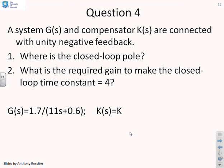Question 4. A system g of s and a compensator k of s are connected with unity negative feedback. Where's the closed loop pole? And what's the required gain to make the closed loop time constant equal to 4? And here's the system that you're given. g equals 1.7 over 11s plus 0.6 and k of s equals k. So we want to know where's the closed loop pole. And what choice of k will I use to get a time constant of 4?